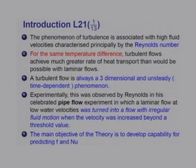This was the first formal experimental evidence of turbulent flow, although in nature people have always observed it. The objective of the theory of turbulent flows is mainly to develop capability to predict friction factor and Nusselt number, which are of relevance to the engineer — but the randomness must somehow be combated.